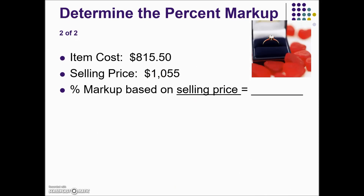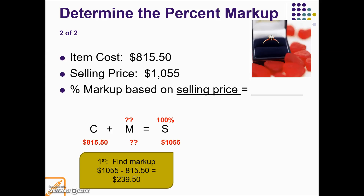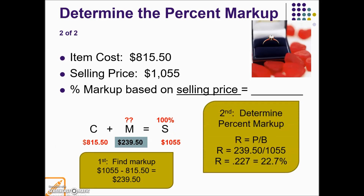In the next problem, we have the cost and selling price of an item and the question asks for the percent markup based on selling price. That phrase tells us where the 100% base falls in this percentage problem. We replace cost and selling price with the values given. Because we know two of the three values, we solve for markup by subtracting cost from selling price, leaving a difference of $239.50. We then solve for the rate by taking part divided by base, converting to a percentage, giving us a 22.7% markup.